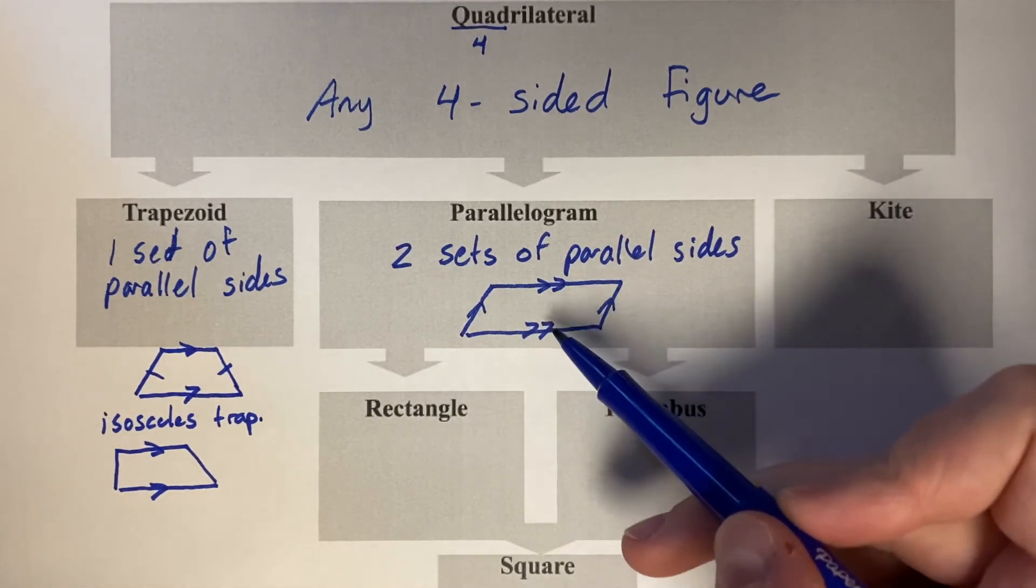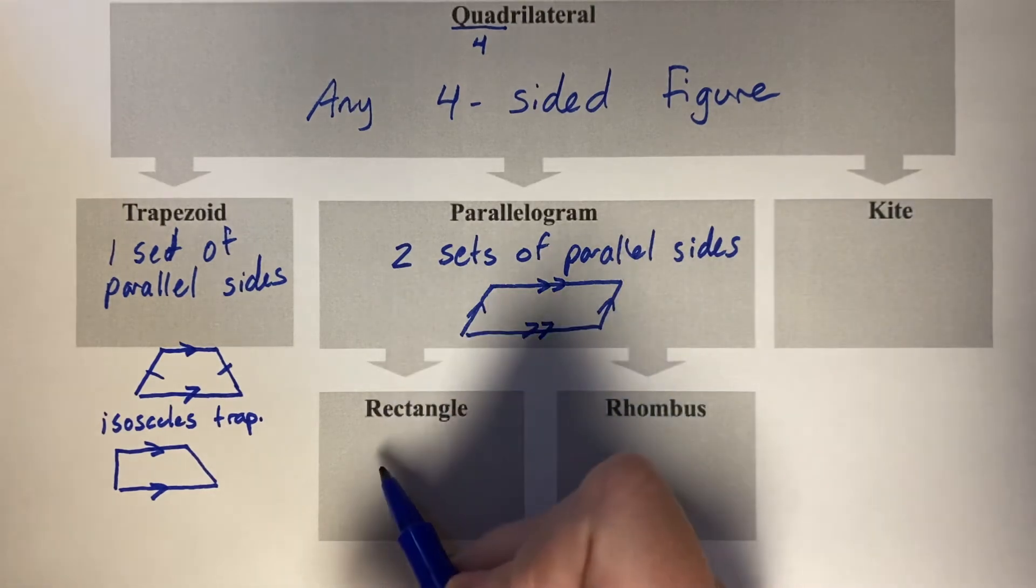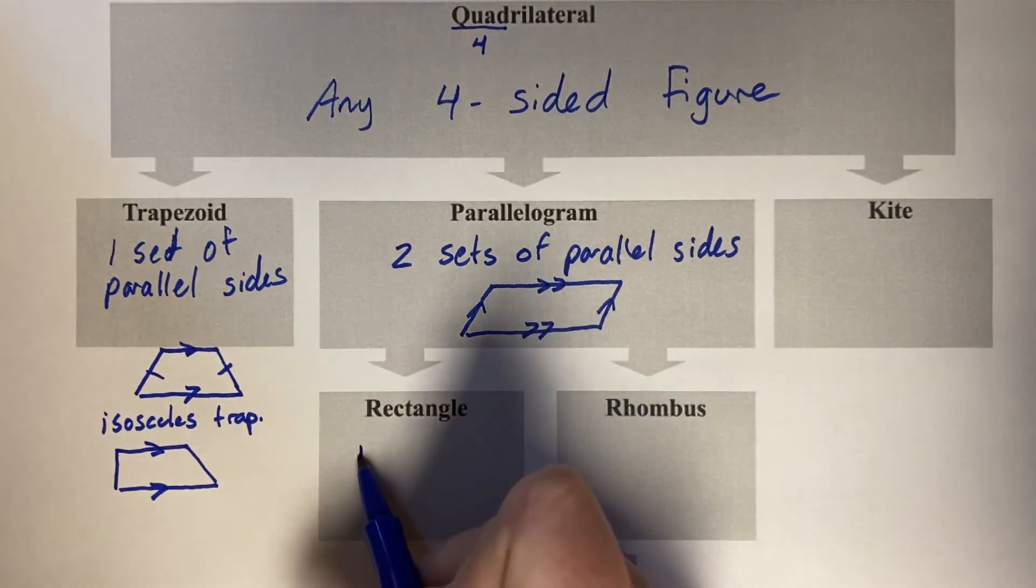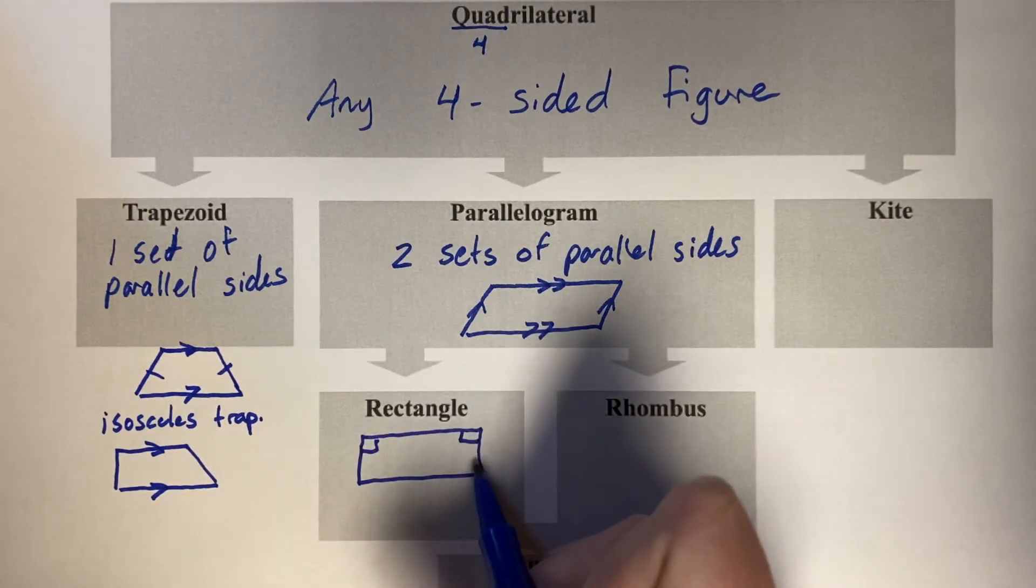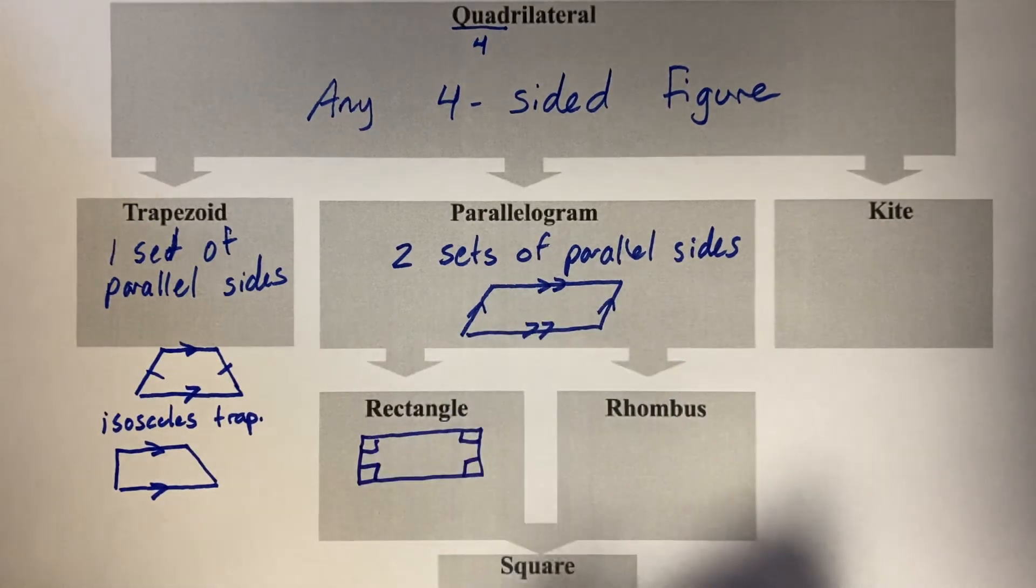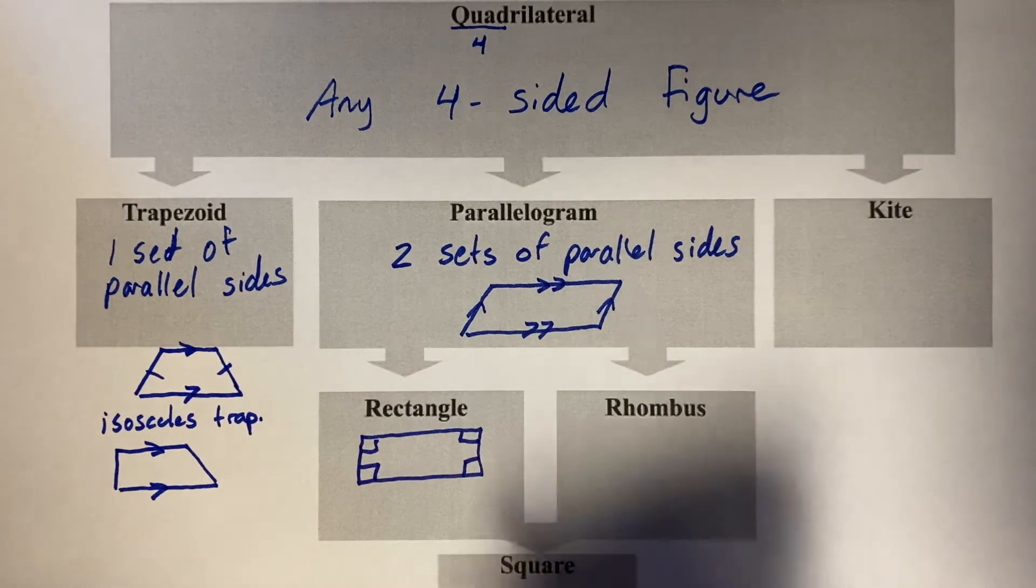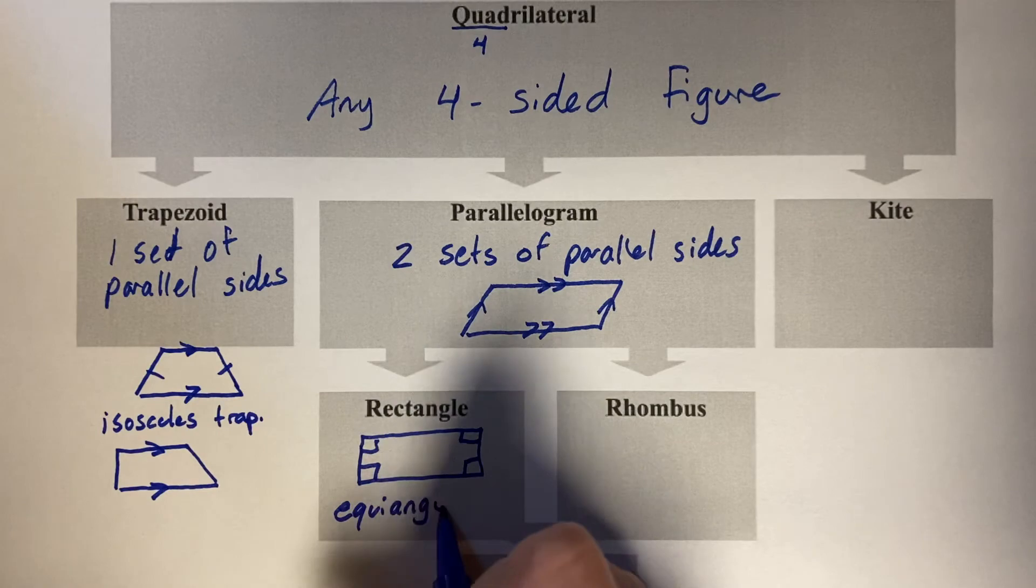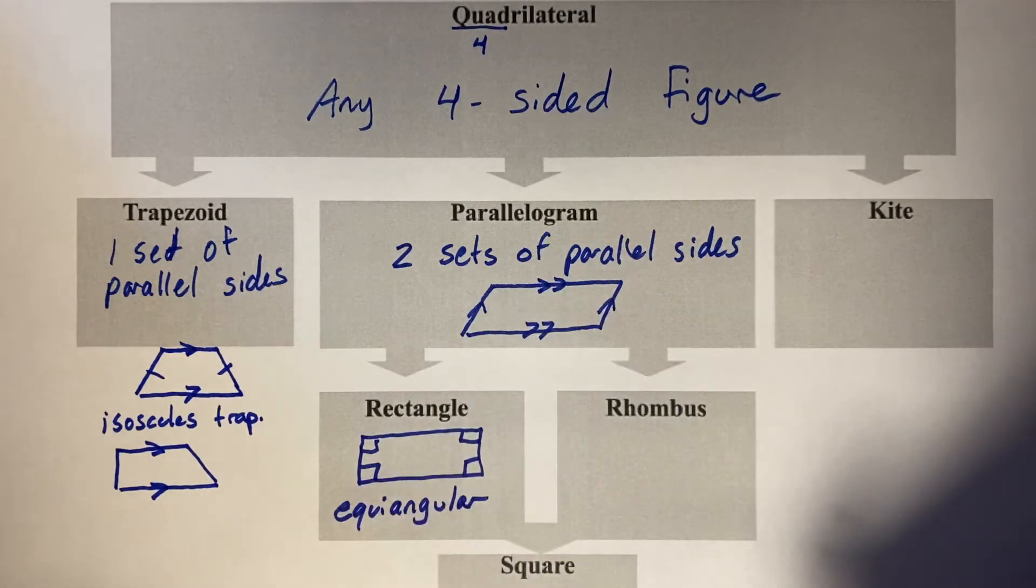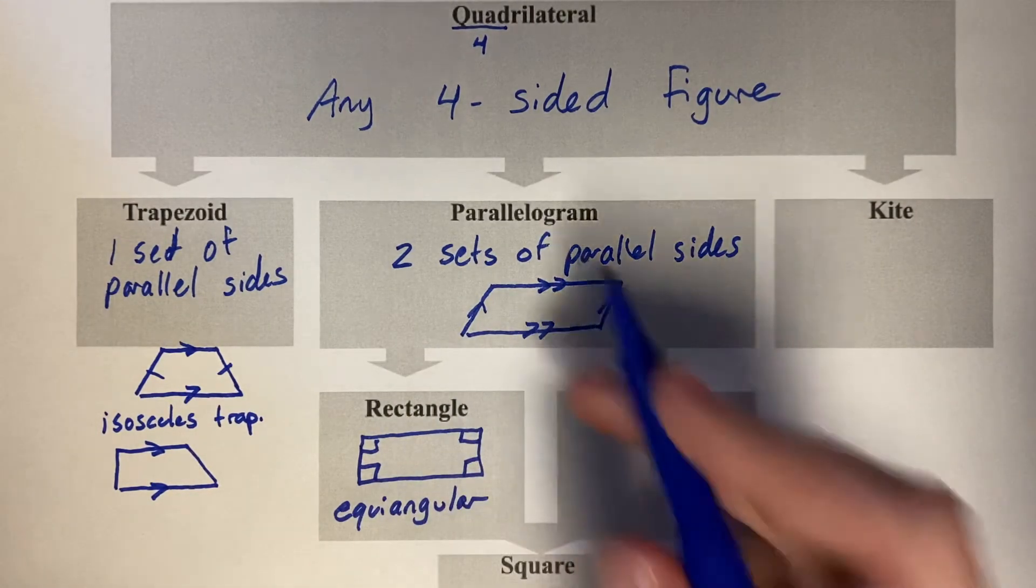but say you stand that parallelogram upright and make all of the angles 90 degrees. So if you stand it upright and make all the corners 90 degrees, you create a rectangle. That's called equiangular. So a rectangle is an equiangular parallelogram.